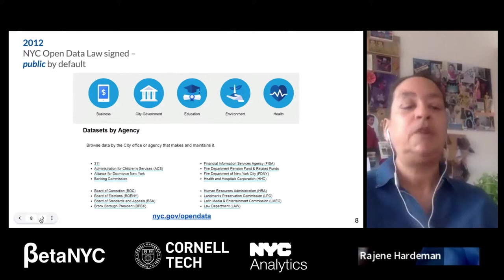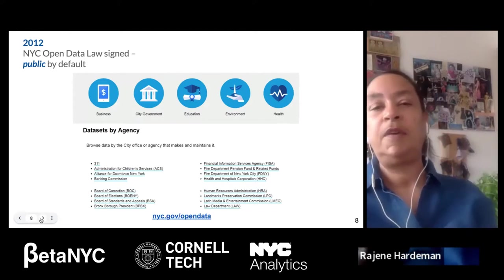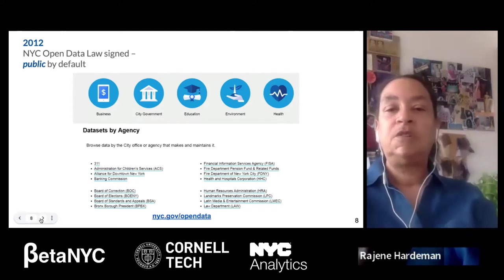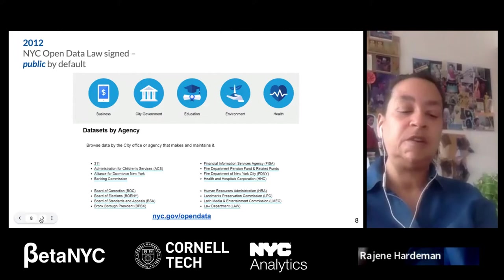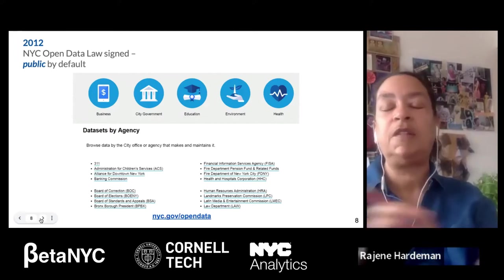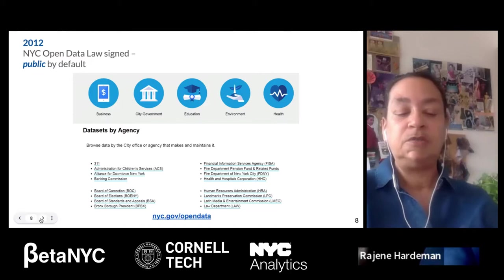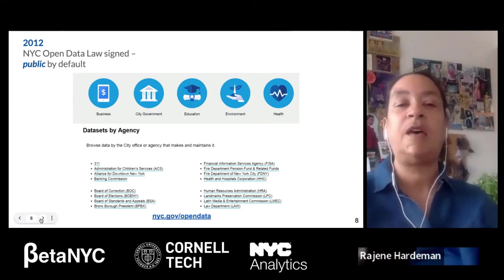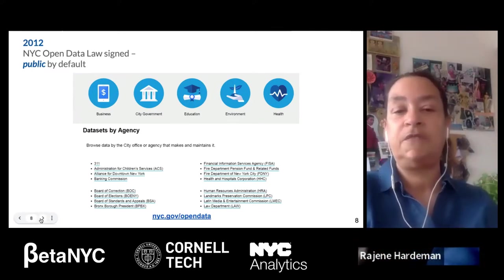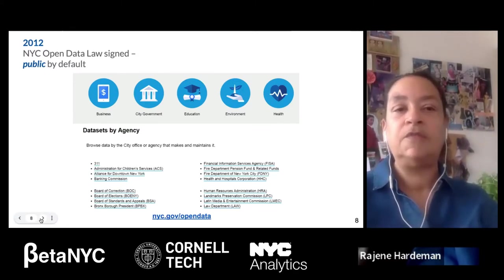About 10 years ago, the actual New York City Open Data law was signed, and that made public data public by default. The difference between the NYC Open Data law and other governments in the United States is that some used executive policies or executive orders, but here in New York City it became a law. You no longer needed to request information as with FOIL — you could simply look at these datasets that are public by default.